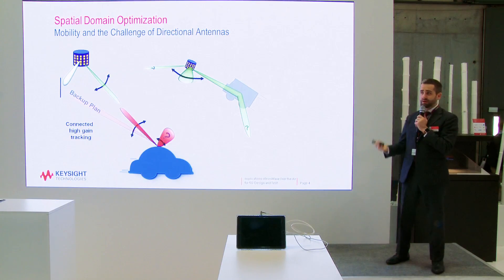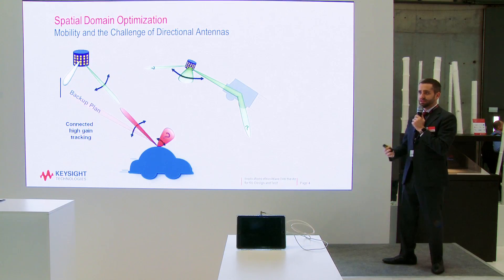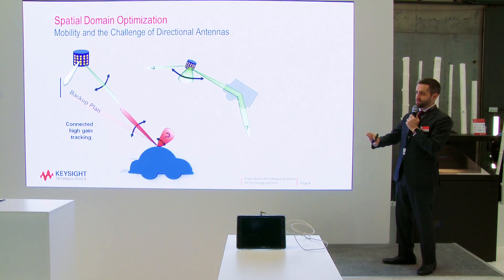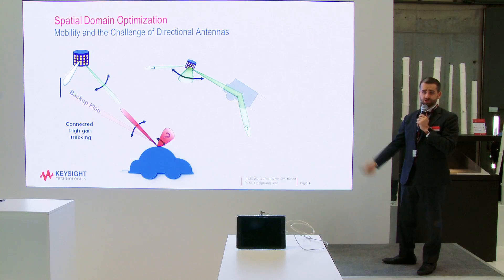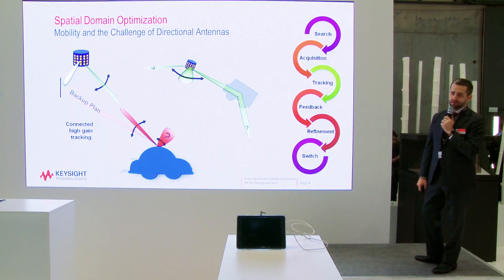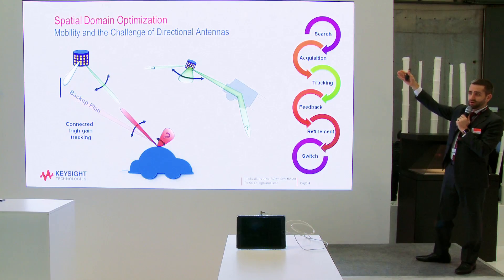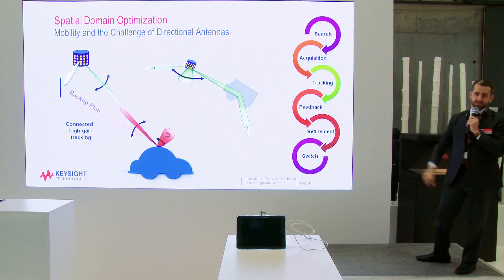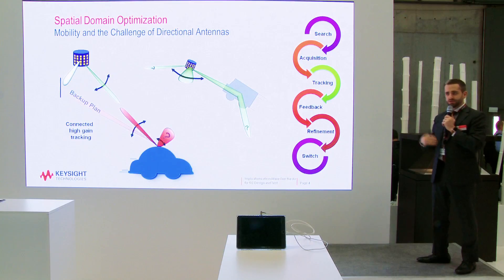Where are the beams? How many are there? What is the best decision to maintain the link and user experience? These challenges are only touched on in 4G but are a major issue as we look forward to 5G. The best way to think about this is the beam management sequence: you have to search, acquire, then track the beams, provide feedback on your link, you may refine, jump to that backup, and then execute the switch. Beam management is a key element in the OTA vocabulary.